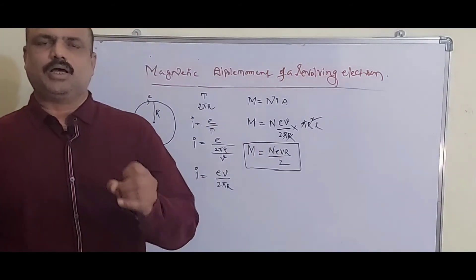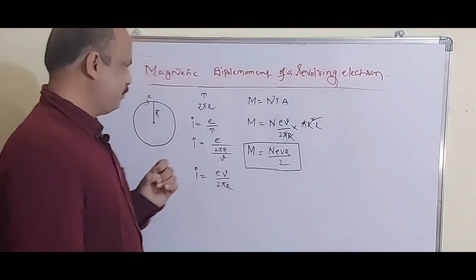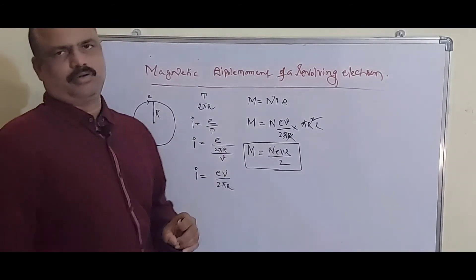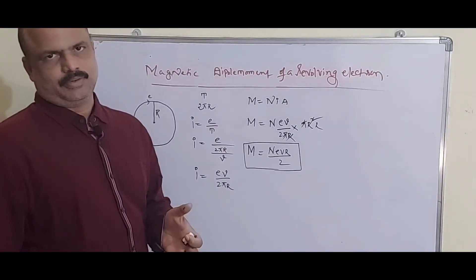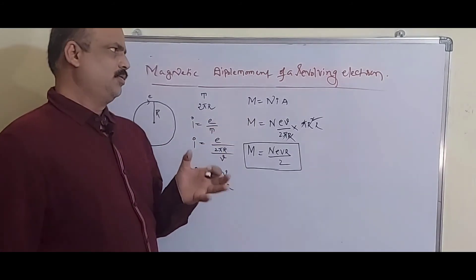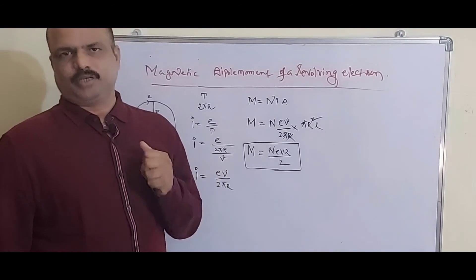This is the expression for the magnetic moment of a revolving electron in an orbit. This is a very important question asked a number of times in public examinations.